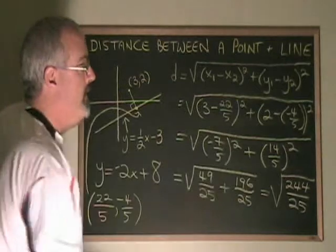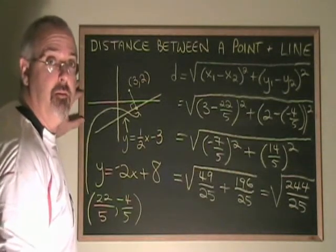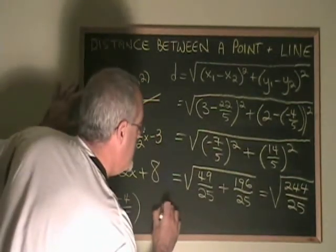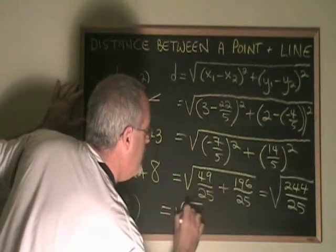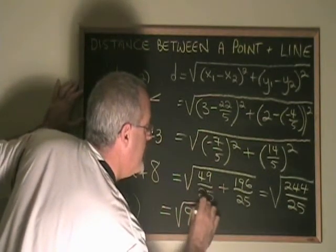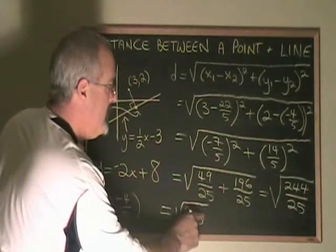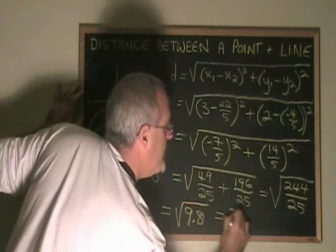Converting 244 over 25 into decimal, we get 9.8. And finally, when we square root it, we get 3.31.